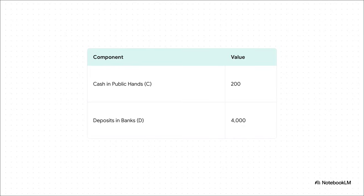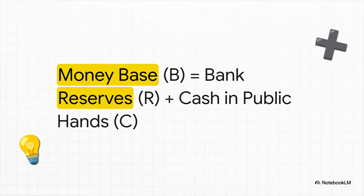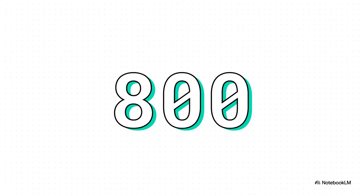Within this economy, the public is holding 200 units as physical cash. The rest of their money — a total of 4,000 units — they've already put into their bank accounts as deposits. So the money base is 1,000, public cash is 200, and the formula is simple: B equals R plus C. That means the banks must be holding 800 in reserves.